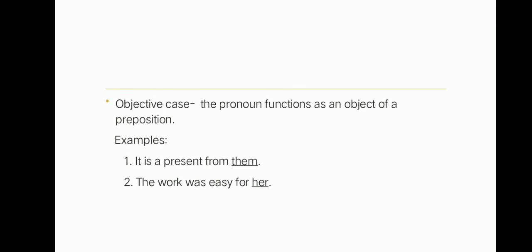Objective case: the pronoun functions as object of preposition. For example, it is the present from them. Them is the object of the preposition from, and them is the objective case version of they. Next, the work was easy for her. Her is the object of the preposition for, and her is the objective case version of she. Did you understand? Do you have a question?